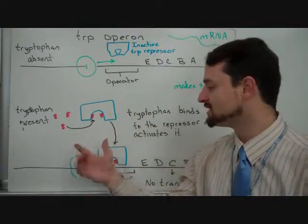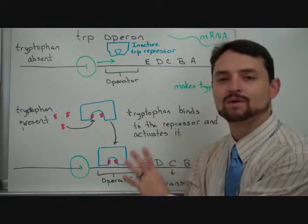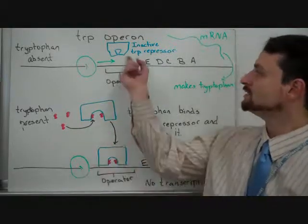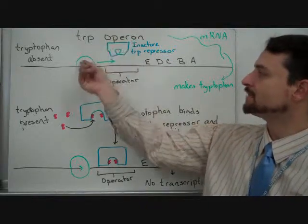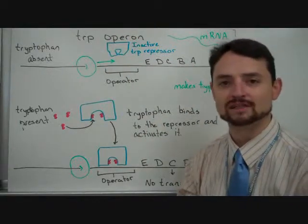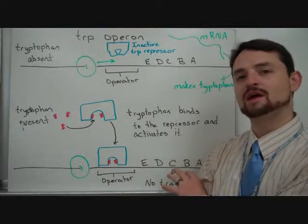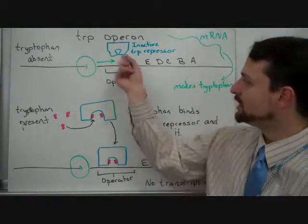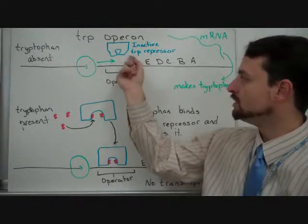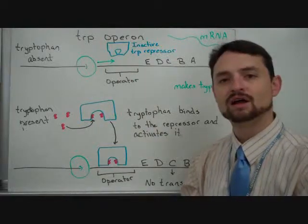So, when tryptophan is present, it turns this off, says, we don't need to make tryptophan, we have it. When it's absent, the repressor will come off of the operator, RNA polymerase will proceed. This is also an example of negative control. We are using a repressor, once again, to lock in that operator.